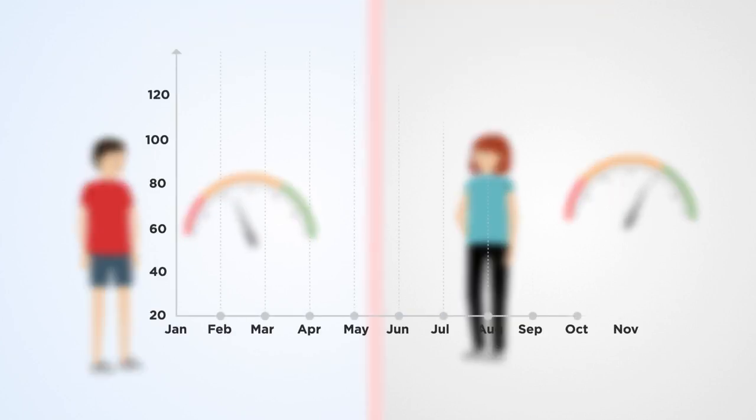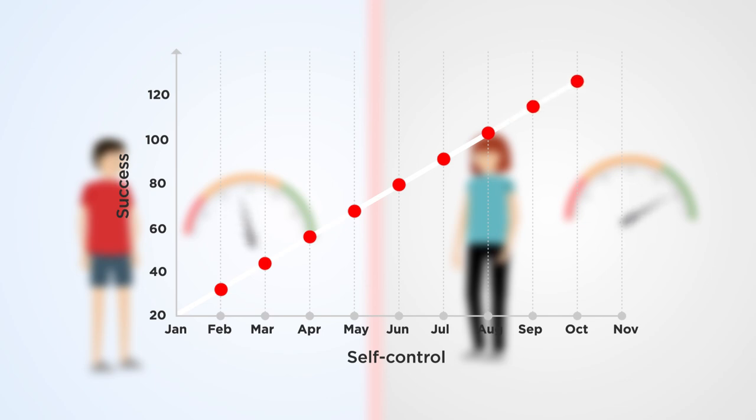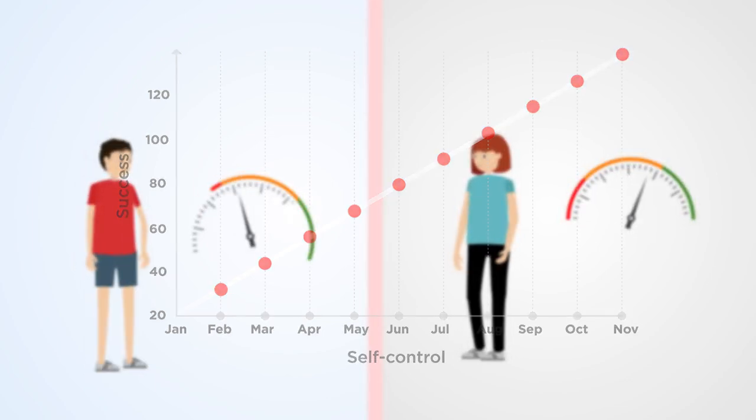New research by Professor Mathias Allemand from University of Zurich and international collaborators has found that self-control change in adolescence does have consequences for work and love in adulthood.